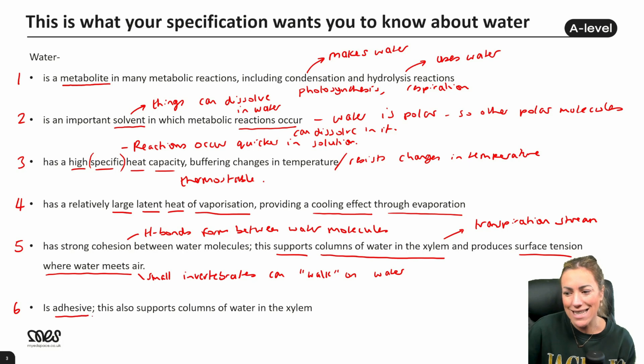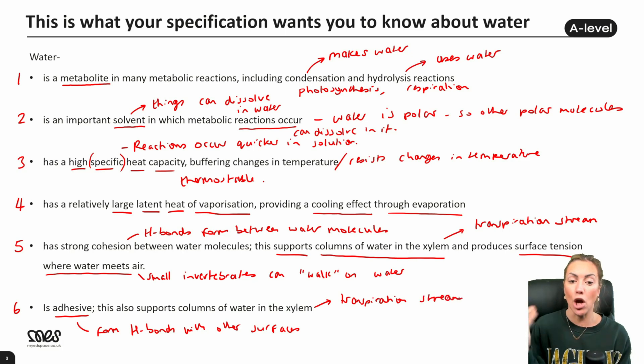Water is also adhesive. So this almost means water can stick to other surfaces or form hydrogen bonds with other surfaces. And again, the advantage that we can give for this one is it also supports columns of water in the xylem, in the transpiration stream, because as water is moved up the xylem, not only are the water molecules sticking to each other, which would be cohesive, but they're also sticking to the walls of the xylem, which is made of lignin, which helps to pull that continuous column of water upwards and not allow it to fall back down.